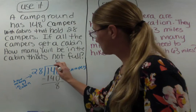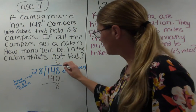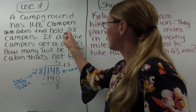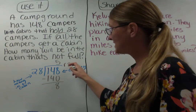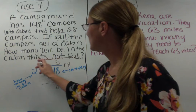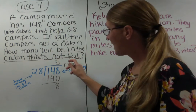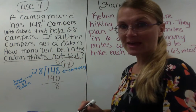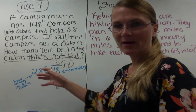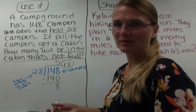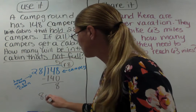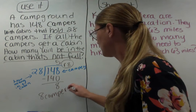Yesterday, the answer was that we had five full cabins. But today I'm asking how many are in the cabin that is not full. If all of them get a cabin, I'm going to need six cabins because I have to put these eight remaining campers in a cabin. And it's asking how many are in the one that's not full. So in the cabin that's not full, there are going to be eight campers. Our answer is: there are eight campers in the cabin that's not full.